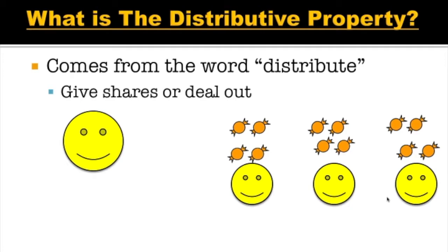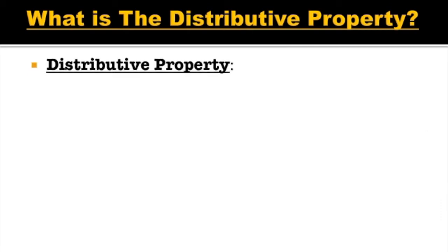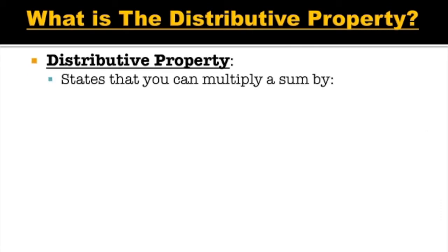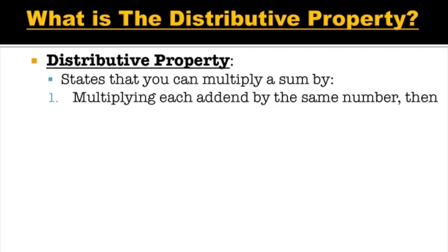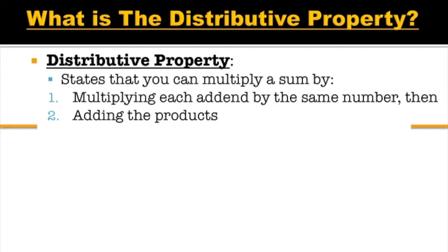That's basically what the distributive property does, except it's with numbers and with multiplication. You'll see what I mean in a second. So the distributive property states that you can multiply a sum by: one, multiplying each addend by the same number, then two, adding the products. That sounds horrifically, terribly, agonizingly, painfully difficult — but it's really not that bad. The way most textbooks word it seems really tricky, but it's not. Take my word for it.